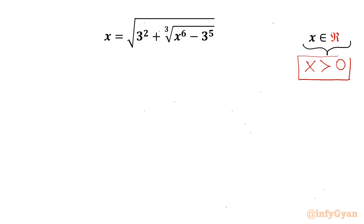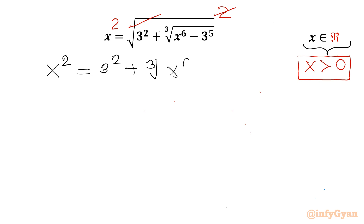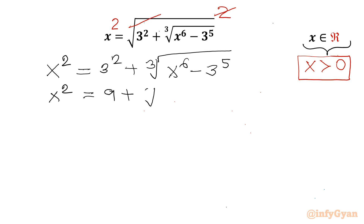Now I will consider squaring both sides, writing power 2 on each side. We can cancel the square root with this power 2. Our equation becomes x² on the LHS. The RHS will be 3² plus ∛(x⁶ − 3⁵), which simplifies to 9 plus ∛(x⁶ − 243), since 3⁵ = 243.